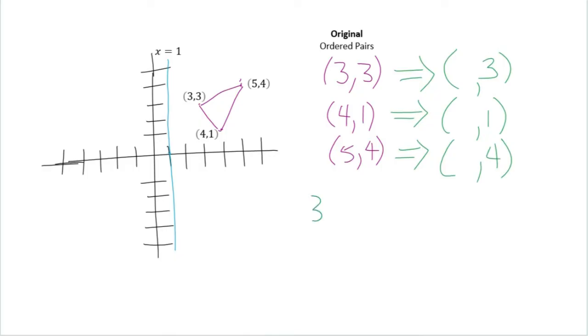Take our original number, 3, from the x coordinate. Determine how many units away by setting it equal to our reflection value, which is 1. We're going to do that for each point.